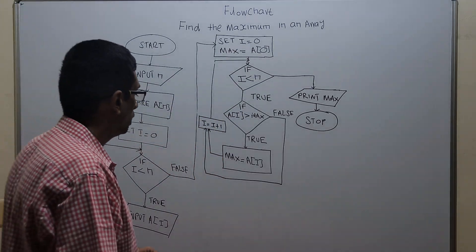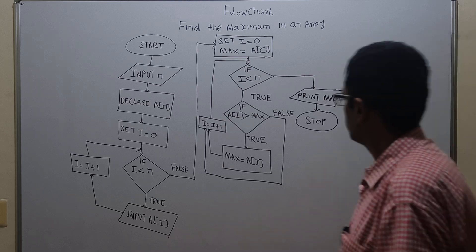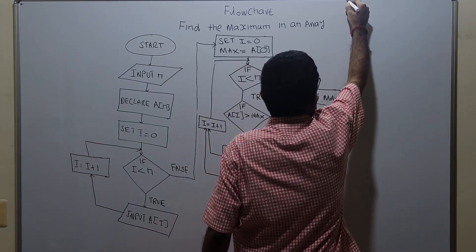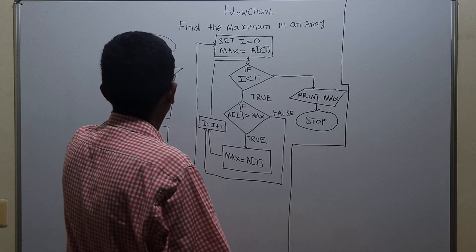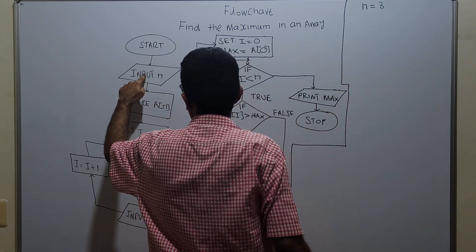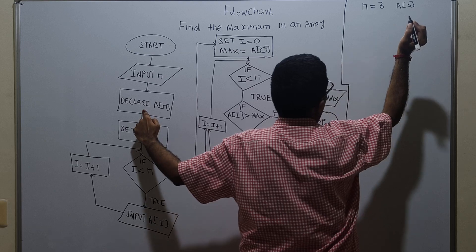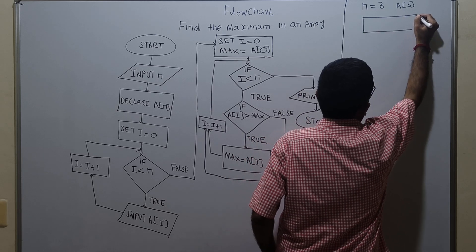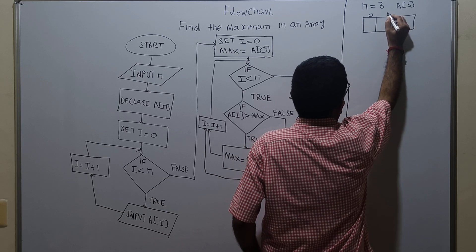Now we will take a sample input and check how this flowchart works. For input n, I am assigning the value 3. Then declare a of n — I am declaring an array a of size 3. That means indices 0, 1, and 2, and the array name is a.